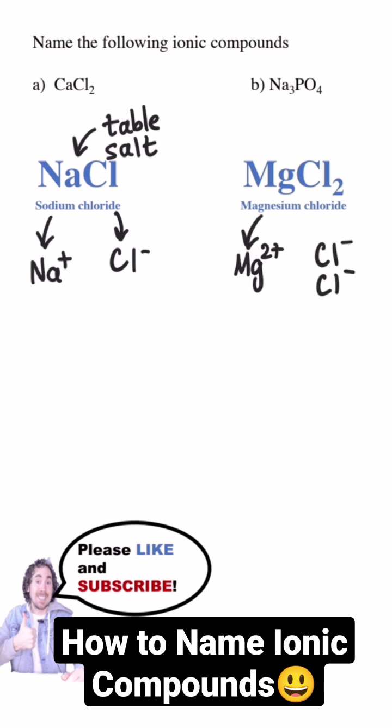On the other hand, magnesium chloride consists of one magnesium ion and two chloride ions since the magnesium has a two positive charge and two chlorides are needed to cancel that out.